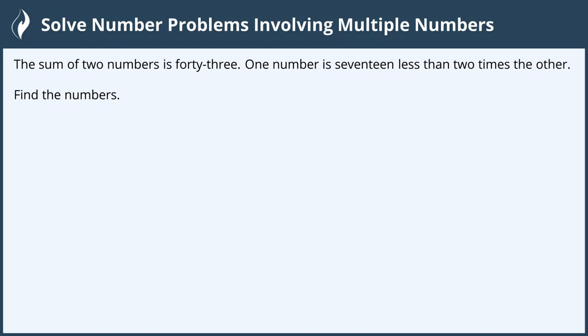Hi everyone! In this video we will solve number problems involving multiple numbers. The sum of two numbers is 43. One number is 17 less than two times the other. Find the numbers.